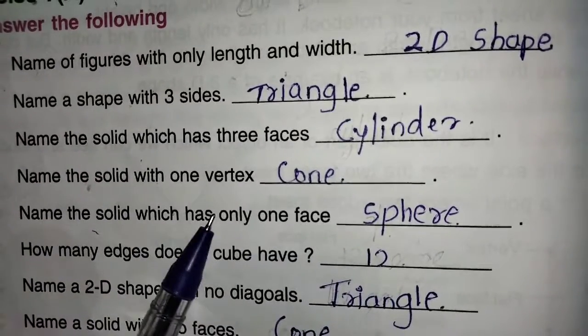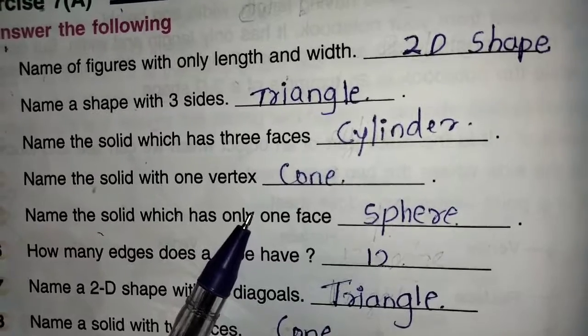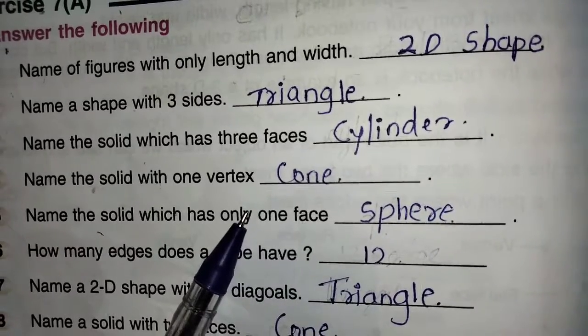Name the solid with 1 vertex. It will be having vertex. It is known as a cone.